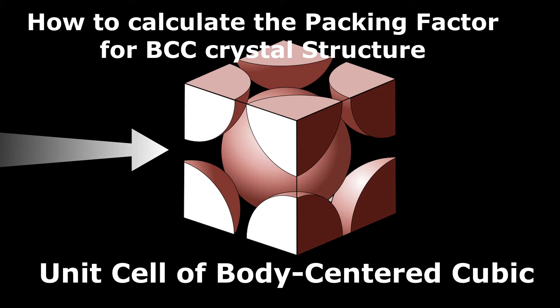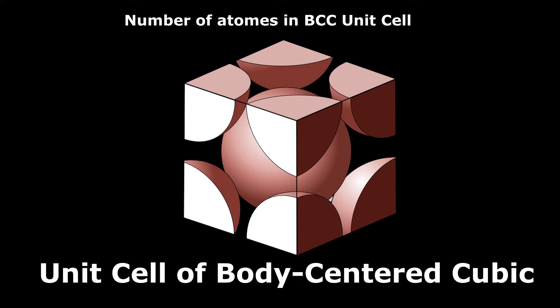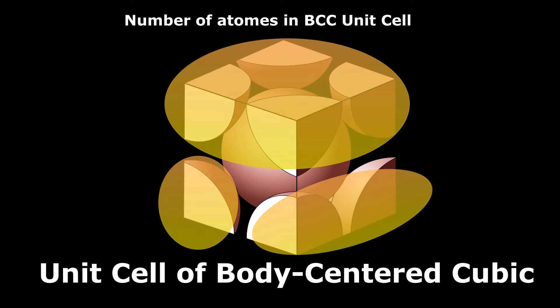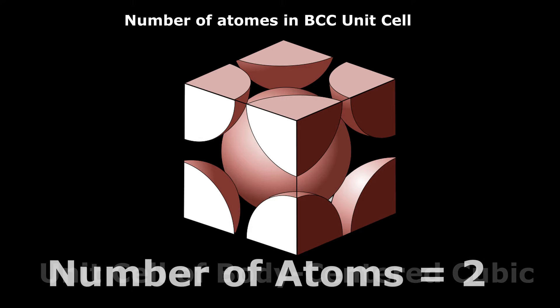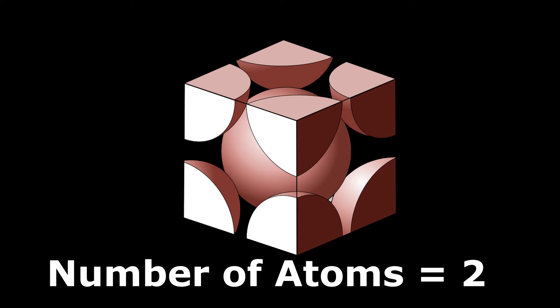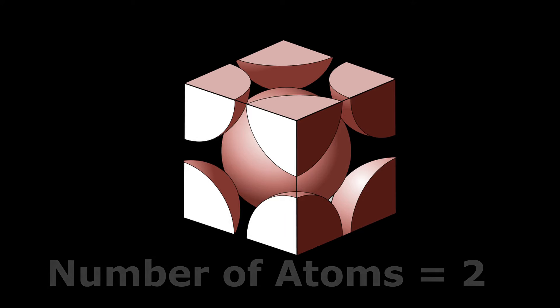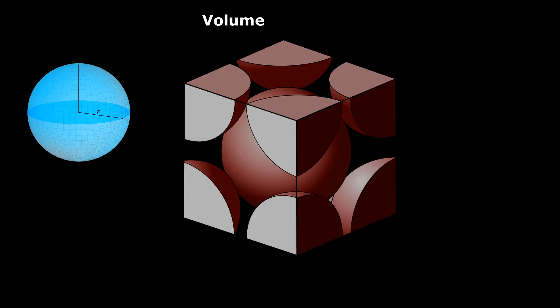This is the unit cell of a body-centered cubic crystal structure. If we combine all the pieces of atoms from the corners, it will make one atom, so there are only two atoms in the unit cell of a body-centered cubic crystal structure — one complete atom from the corners and one in the center.